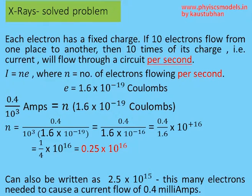And when you do the calculation, you get 0.25 into 10 to the power 16, or 2.5 into 10 to the power 15. That many electrons are involved in the X-ray tube. Thank you.